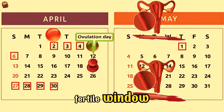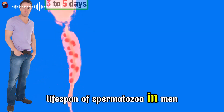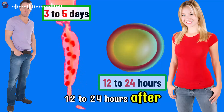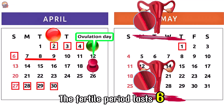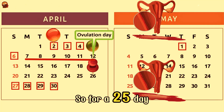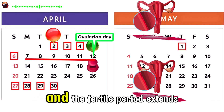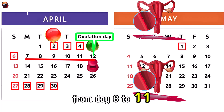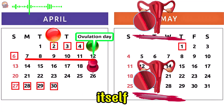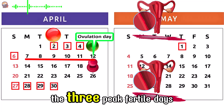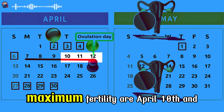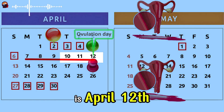Now we can identify the fertile window. It is determined by the lifespan of spermatozoa, 3 to 5 days in the female genital tract, and that of the egg, 12 to 24 hours after ovulation. The fertile period lasts 6 days per cycle — the 5 days preceding ovulation and the day of ovulation itself. So, for a 25-day cycle, ovulation occurs around day 11 and the fertile period extends from days 6 to 11. The peak fertility period is concentrated in the 2 days preceding ovulation and the day of ovulation itself — for a 25-day cycle, the 3 peak fertile days are days 9, 10, and 11. In this example, the 3 days of maximum fertility are April 10th, 11th, and the day of ovulation, April 12th.